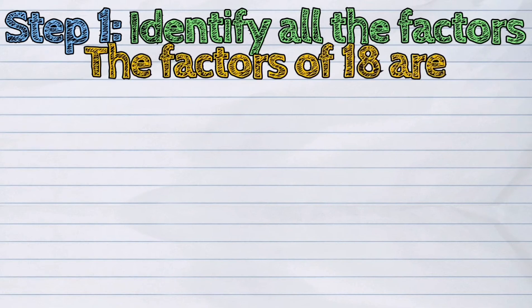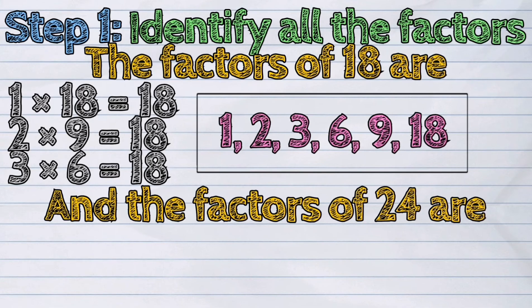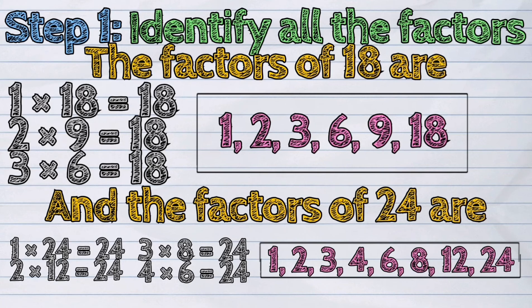The factors of 18 are: 1, 2, 3, 6, 9, and 18. And the factors of 24 are: 1, 2, 3, 4, 6, 8, 12, and 24.